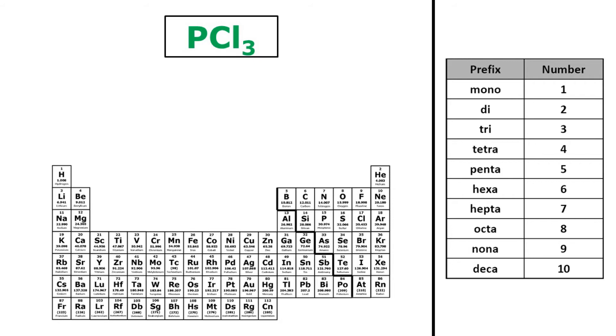So here I have PCl3, so P is phosphorus. I won't change the name, and I also won't use the prefix mono. I don't use the prefix mono on the first element.